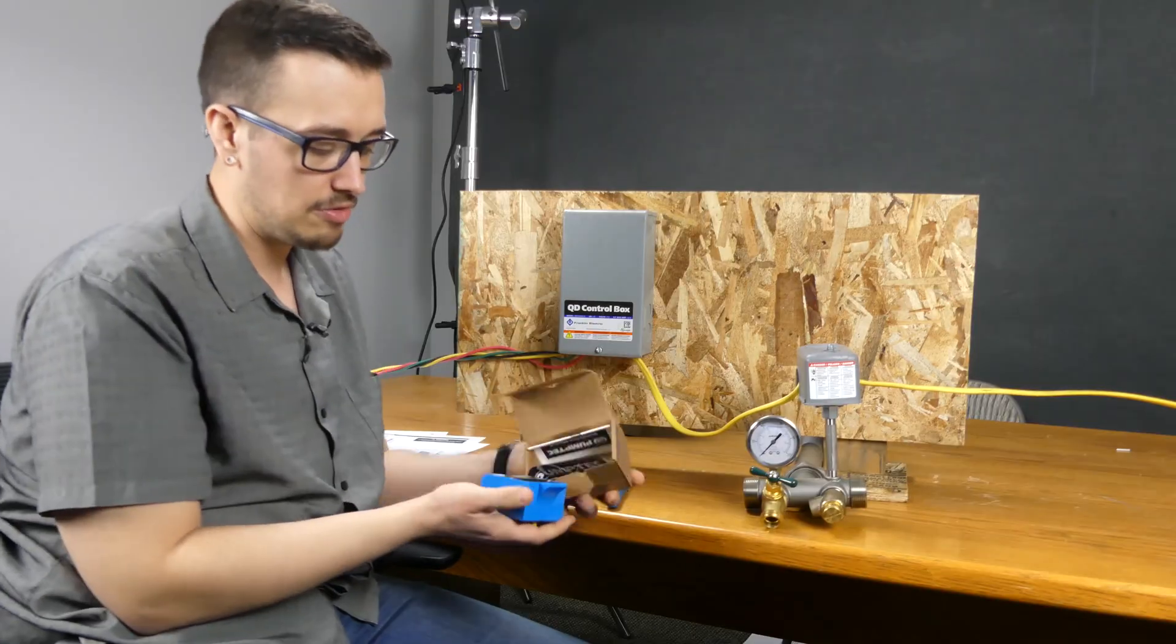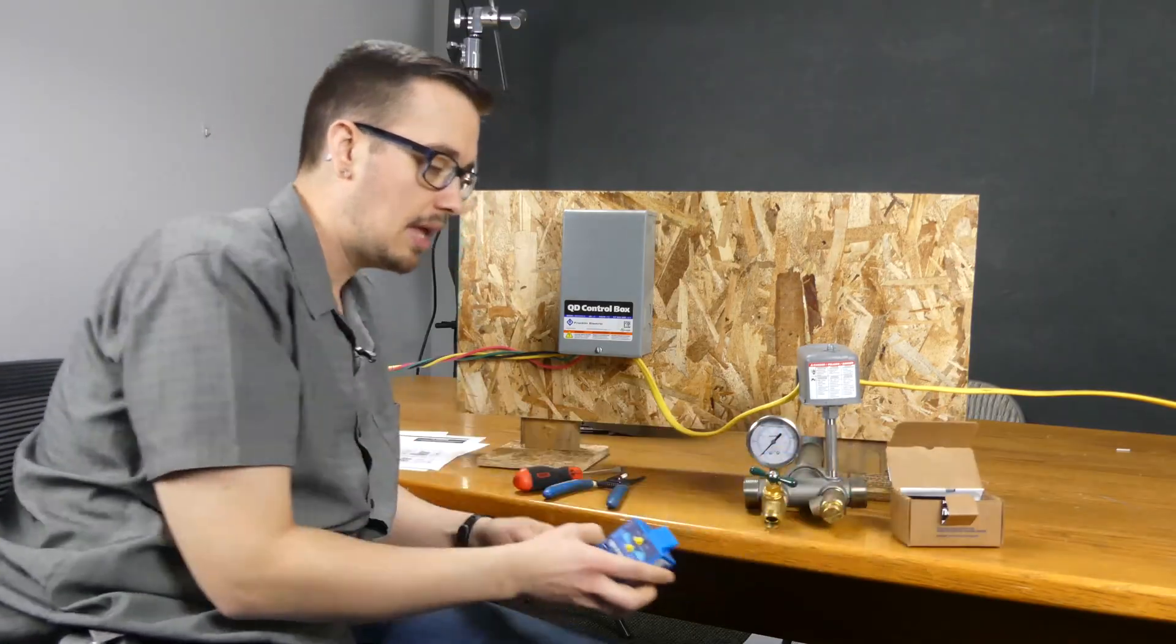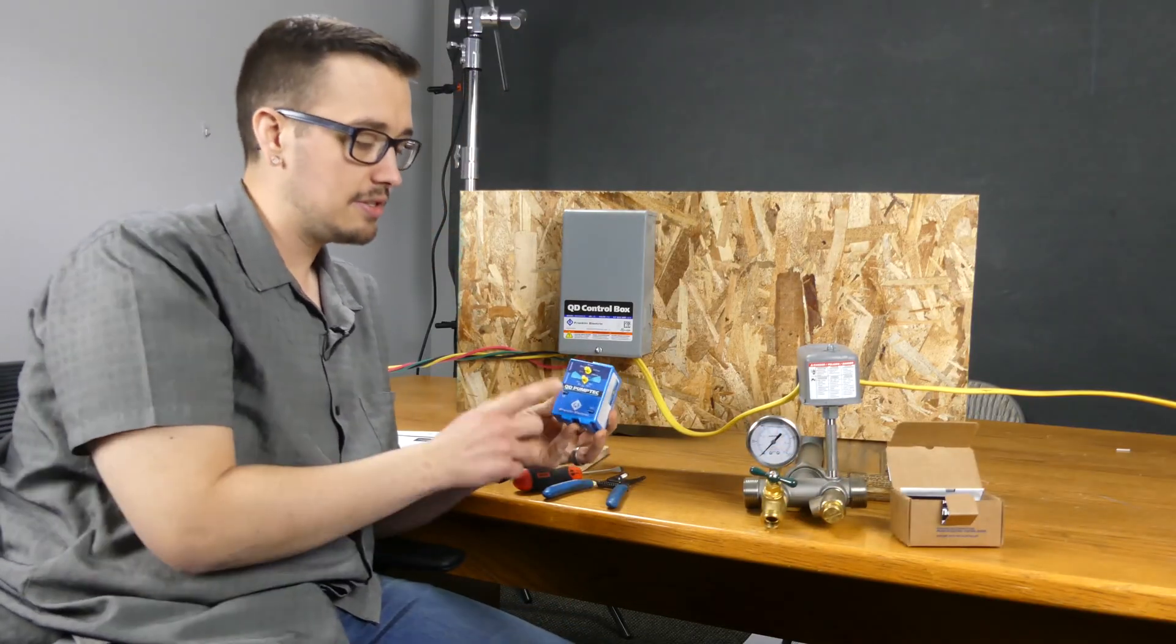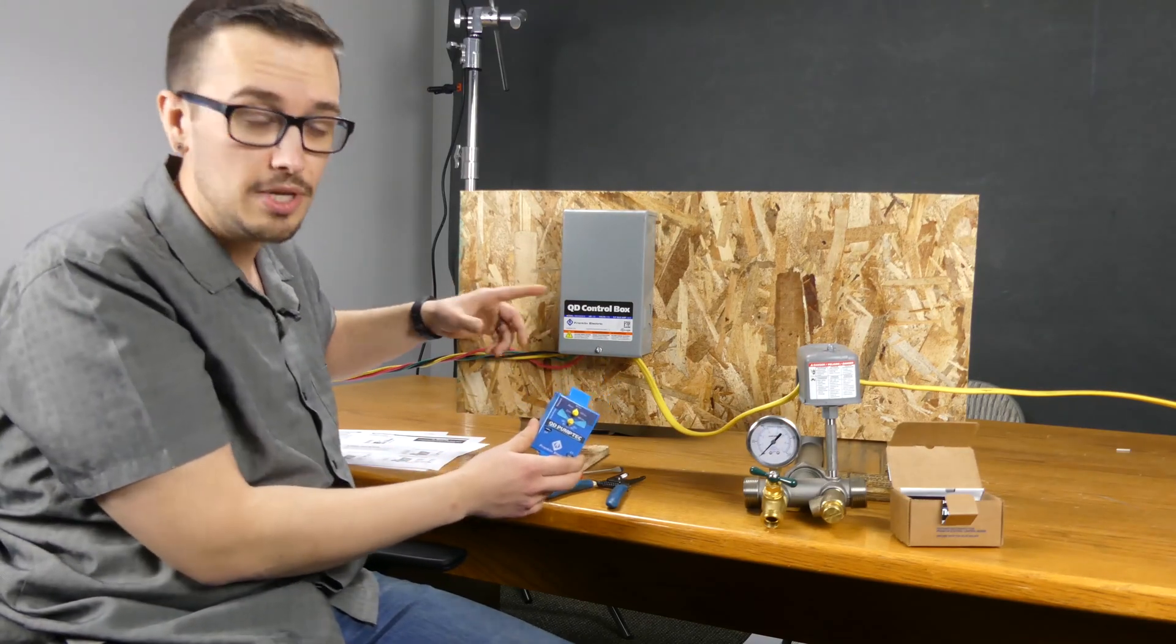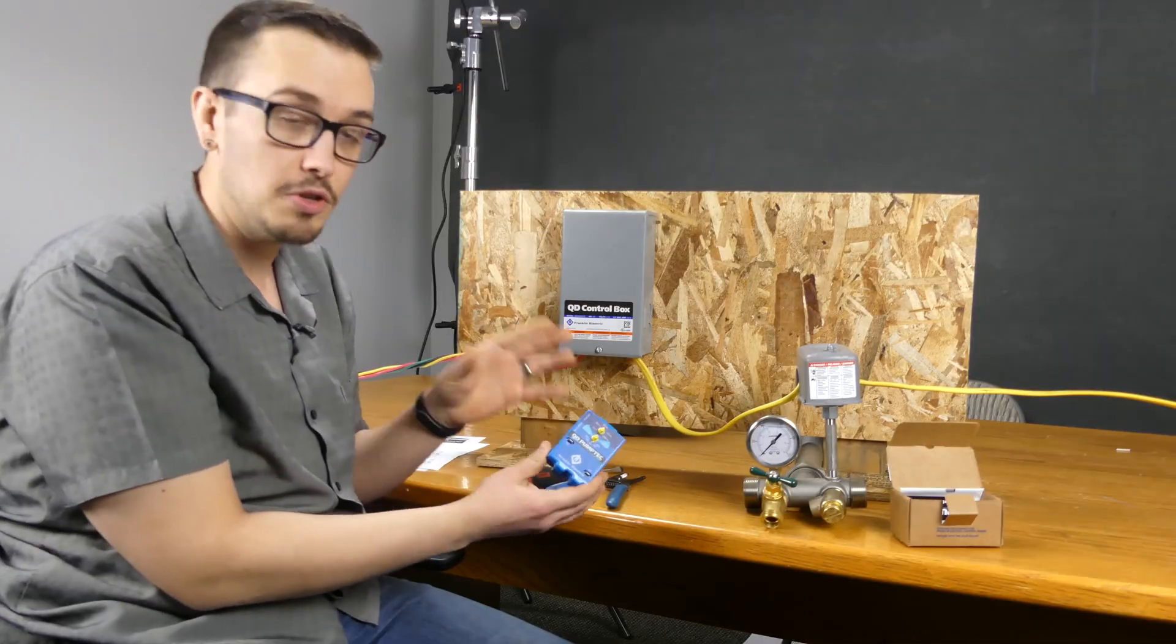Come on out of there, little guy. And it looks just like this. This is the QD version, so it's intended to go inside of these Franklin Electric QD boxes. And we do have a video that kind of outlines the features and benefits of owning this.